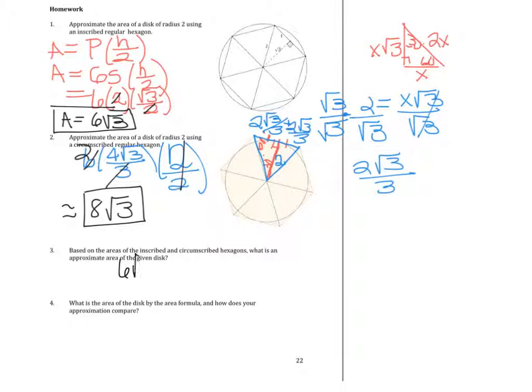6 radical 3 plus 8 radical 3, divided by 2, gives us 14 radical 3 divided by 2. Simplify the 2 and the 14, and we get 7 radical 3 as our final answer.